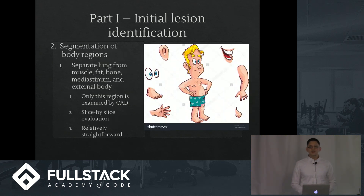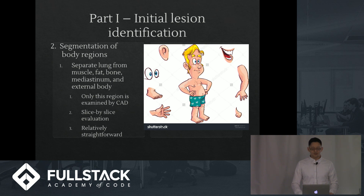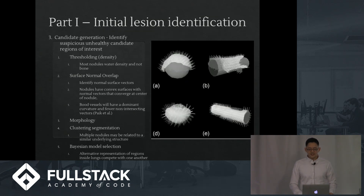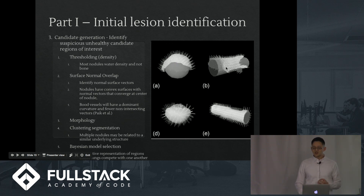Subsequently, we segment the body region — we take the body and divide it up into all the different sections: figure out what part is a blood vessel, what part is a mass, what part is normal parenchyma. We then go through candidate generation, examining the shape of various three-dimensional structures by applying a normal vector which is 90 degrees to the surface of the actual lesion. Generally cancers tend to be more round, like a ball, which has different features from something tubular like a blood vessel.